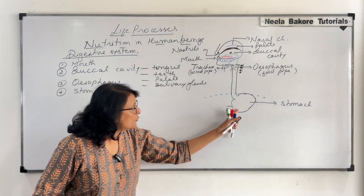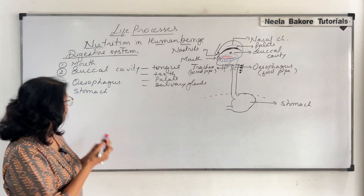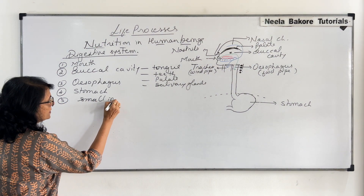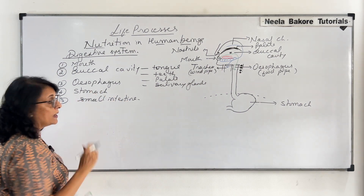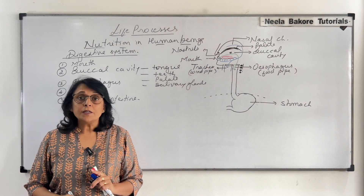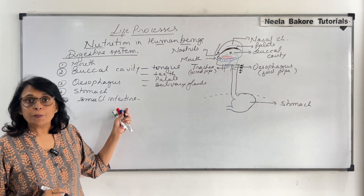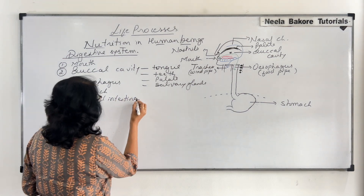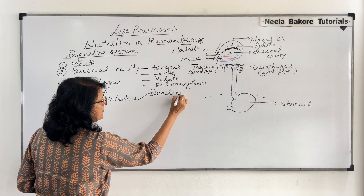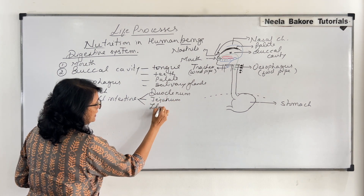From the stomach, food comes into the small intestine, which is a narrow tube but very long. The small intestine together with the large intestine is approximately 20 feet in total. The small intestine has three parts: the first part is known as the duodenum, then there is the jejunum, and then the ileum.